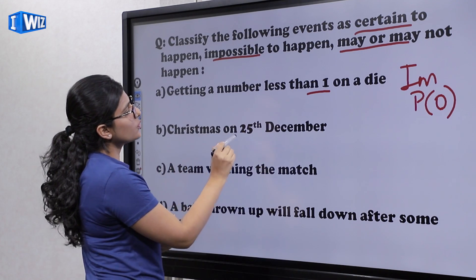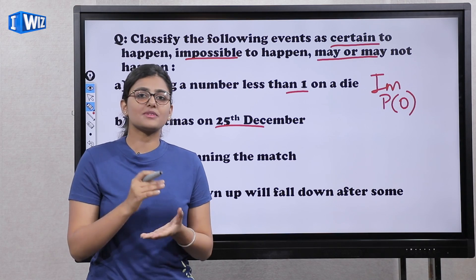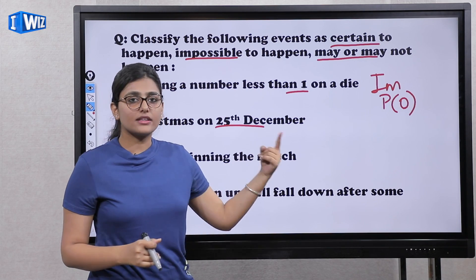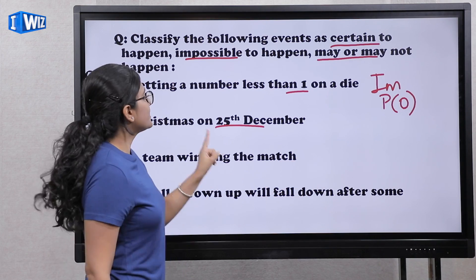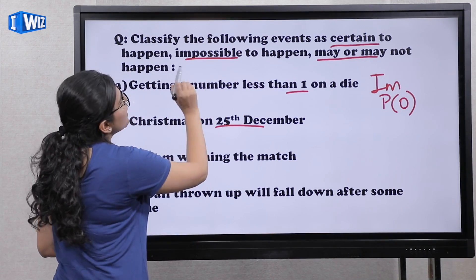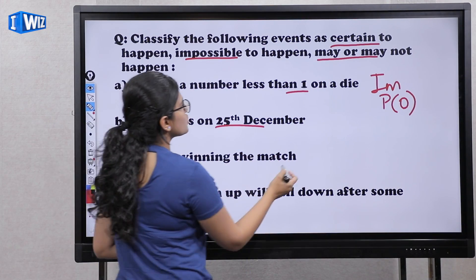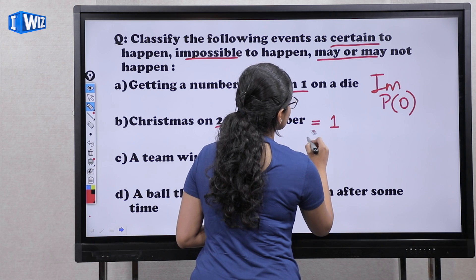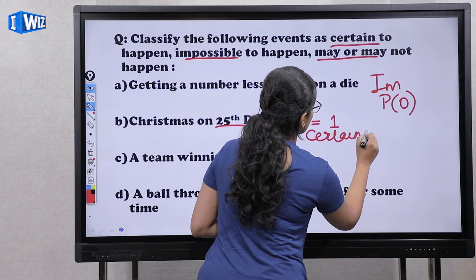The next is Christmas on 25th December. We know that worldwide, Christmas is celebrated on 25th December. There is no other date it can occur, so it will definitely happen on that date. This is a certain event, and the probability is one.